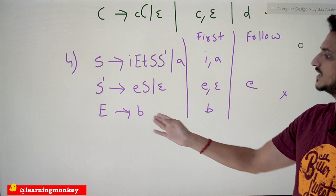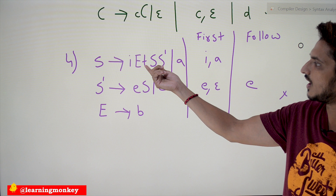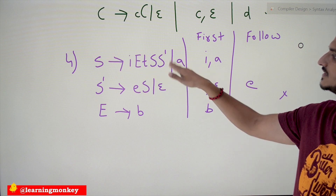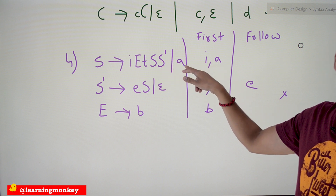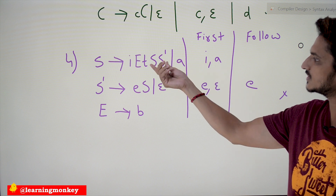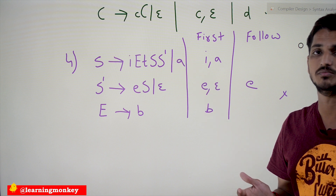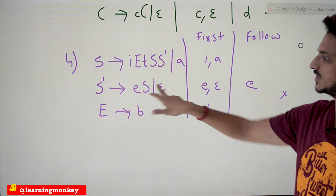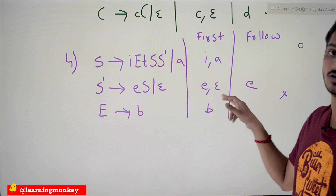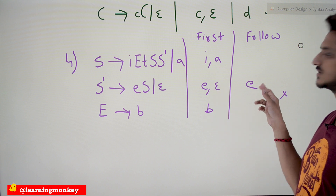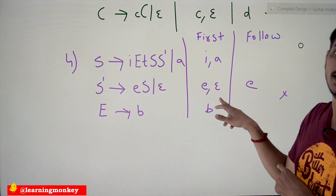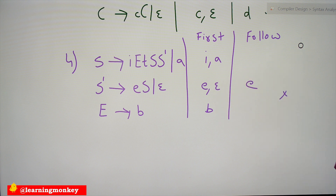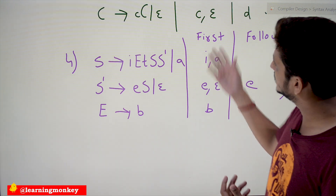Next example: S → iEtSS' | a, S' → eS | ε, E → b. For S, First(iEtSS') = {i} and First(a) = {a} — different first symbols, so condition one is satisfied. For S', First(eS) = {e} and with epsilon, check Follow(S'). Follow(S') = {e, a}. First(eS) and Follow(S') both contain 'e' — there is a common symbol. So this grammar is not LL1.